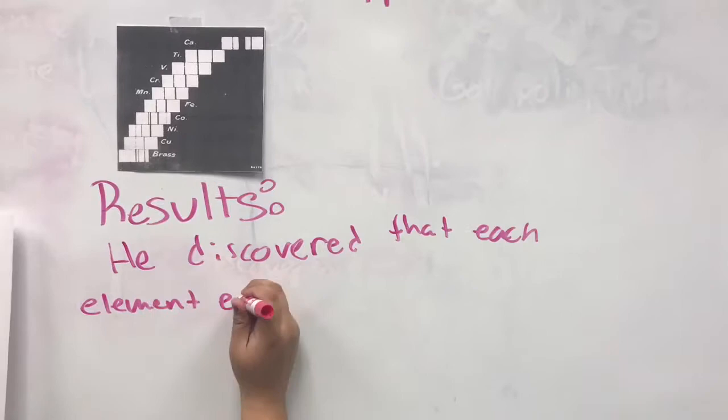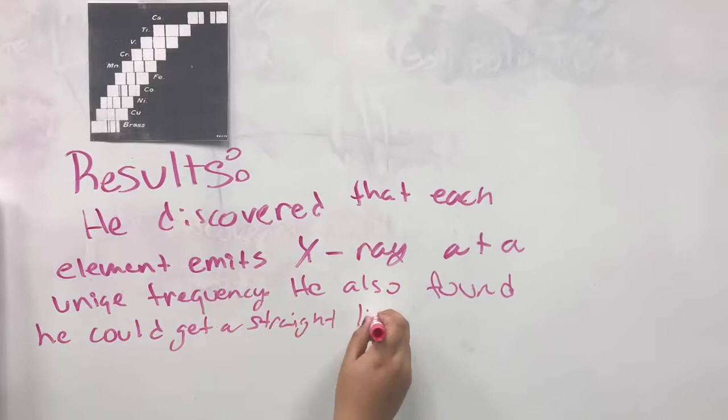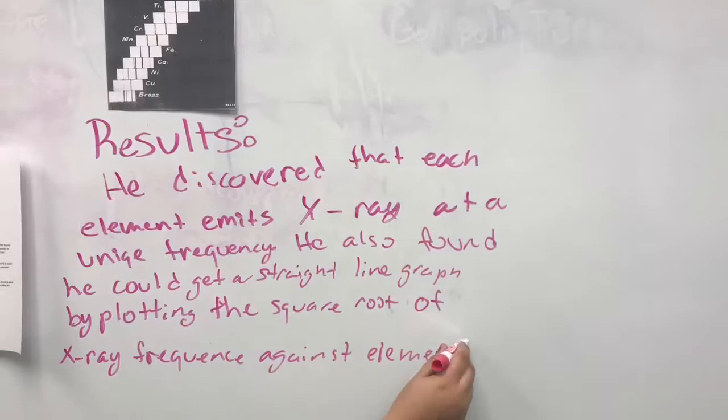He discovered that each element emits X-rays at a unique frequency. He also found he could get a straight line graph by plotting the square root of X-ray frequency against the element's atomic number.